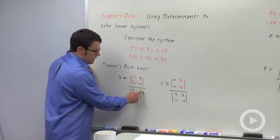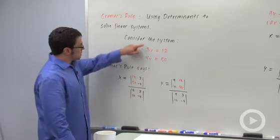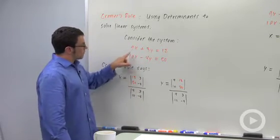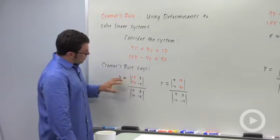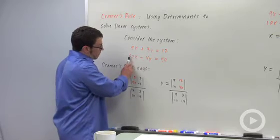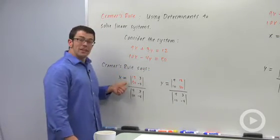Now let me explain where these determinants come from. This determinant in the denominator is the determinant of the coefficient matrix - 9, 3, 10, negative 4. That's from the coefficients on the left side. In the numerator, you basically have the same determinant, only you've replaced the x coefficients with these numbers, the constants. So that's how you get x.